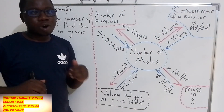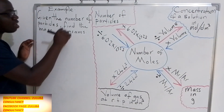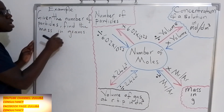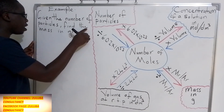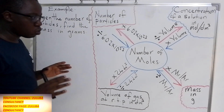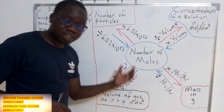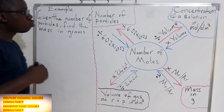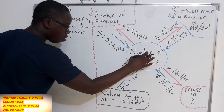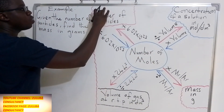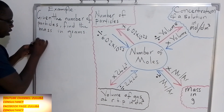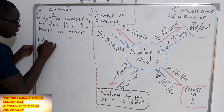Let's imagine that you have a question that has given you the number of particles and you have been asked to find the mass in grams. What do you do? You first have to find the number of moles from the number of particles that you have been given. So, how do we find the number of moles?